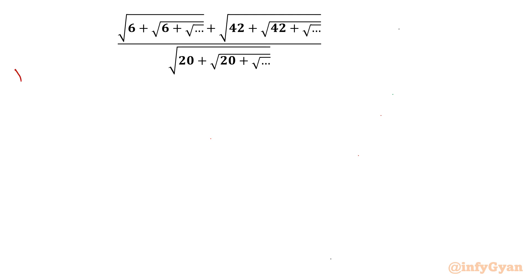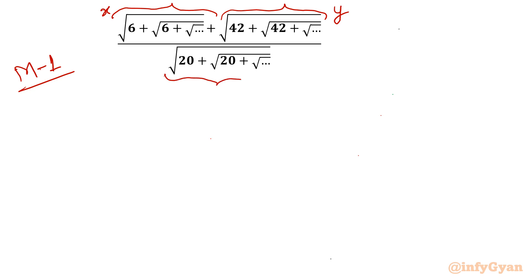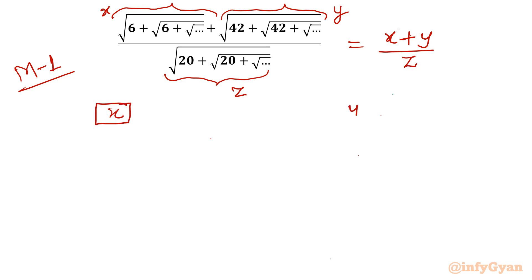I will demonstrate two methods. For method number one, I will consider these three nested terms separately. I will call the first term x, the second term y, and the denominator z. So ultimately I have to find out x plus y over z. I will calculate the value of x, y, and z separately, then substitute into the given expression.